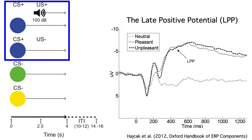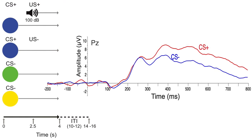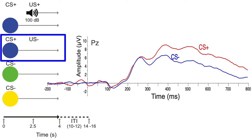The hypothesis was that the late positive potential would be larger for the CS plus than for the CS minus. As predicted, the LPP was larger for the CS plus color than for the CS minus colors. The CS plus waveform shown here is from the 50% of trials on which the CS plus wasn't followed by a noise burst — the CS plus US minus trials — but the same thing was found on the CS plus US plus trials.